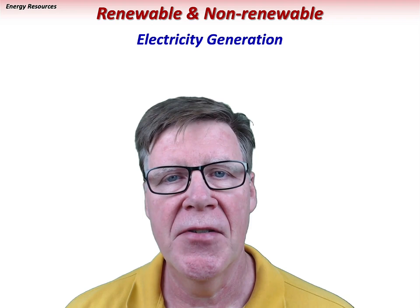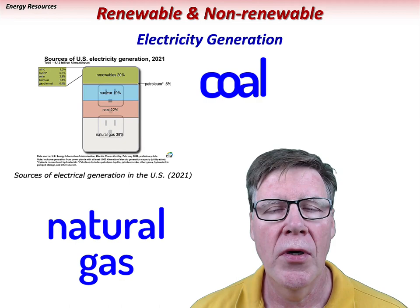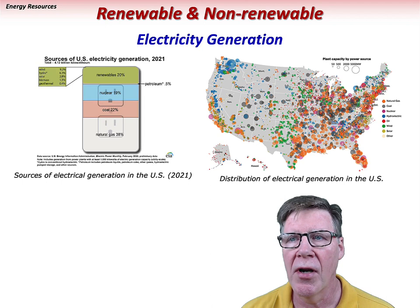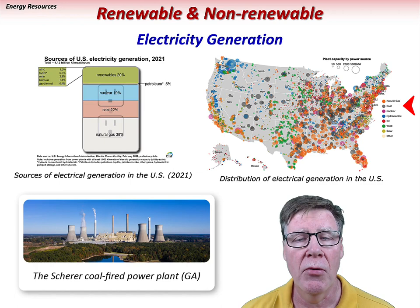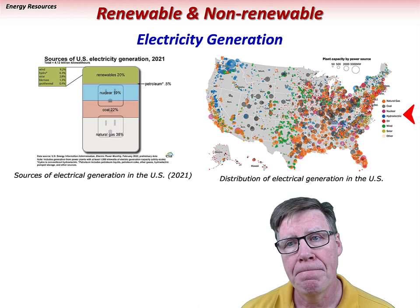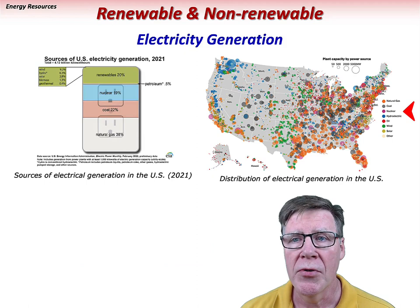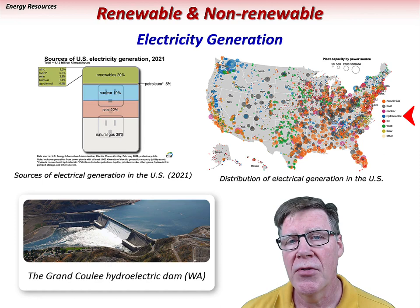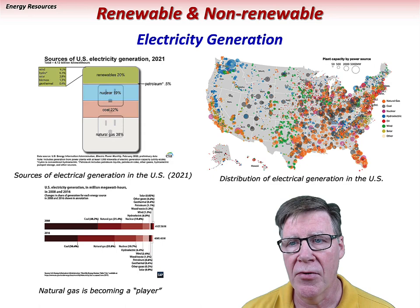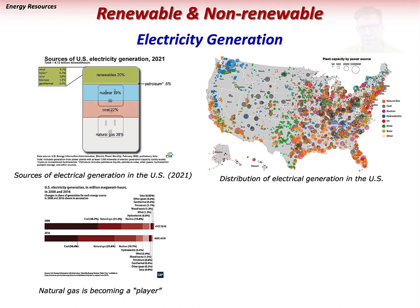This map, showing the distribution of electrical generation across the U.S., has some interesting characteristics. Natural gas generation is dominant in the east, especially along the coast, and also important along the west coast. Coal is spread across the east, midwest, and mountain west. Oil-generated electricity is only significant in the northeast. Nuclear power has isolated locations across the country. Renewables are more regionally limited, with wind dominant in the midwest and hydroelectricity significant for the Pacific Northwest down to California. Natural gas has recently expanded its role in electrical generation, but like coal, has become politically targeted. Nuclear power provides about one-fifth of U.S. electrical generation.